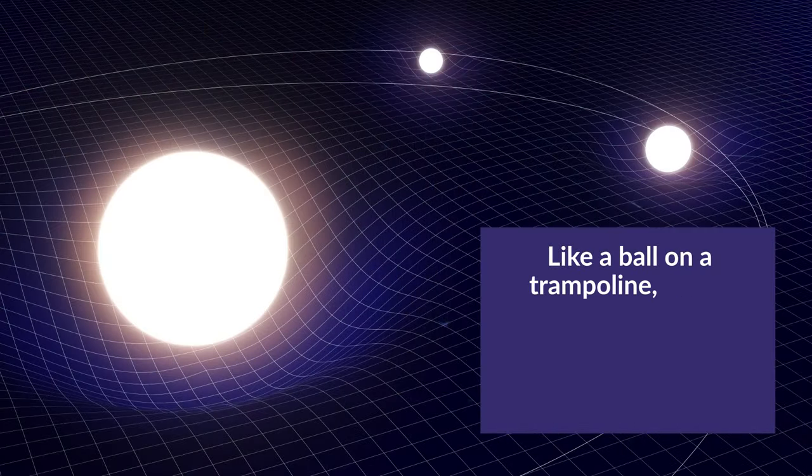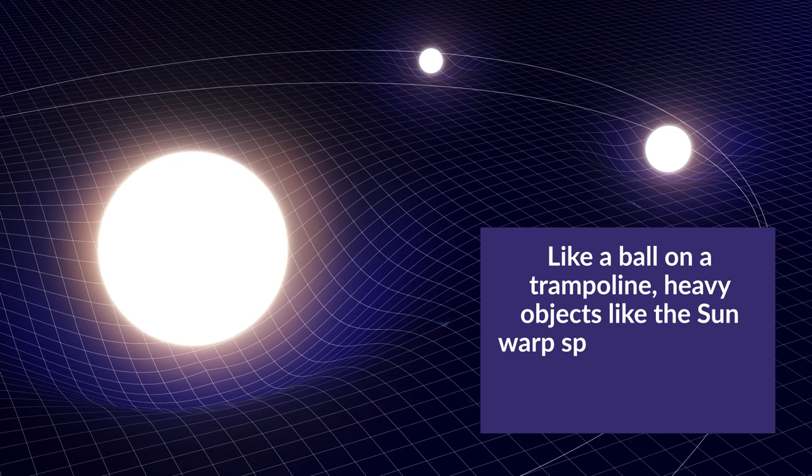Like a ball on a trampoline, heavy objects like the Sun warp space-time around them, drawing the planets into their orbits.